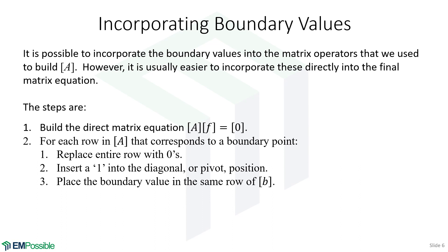How do we incorporate the boundary values? We build our matrix equation by starting with the differential equation, going term by term to put it in matrix form, factoring out the unknown, and putting it in standard form — matrix A and a column vector of all zeros. Then we set up a loop over our boundary points — anywhere that has a known value. For a one-dimensional problem that's the first and last point, but it could also be something known in the middle. At every such point, we go into A and replace the entire row with all zeros, throwing out whatever finite difference equation was there.